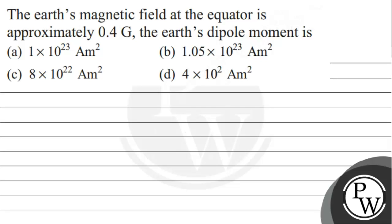Hello Bacho. Let's see this question. The earth's magnetic field at the equator is approximately 0.4 Gauss.